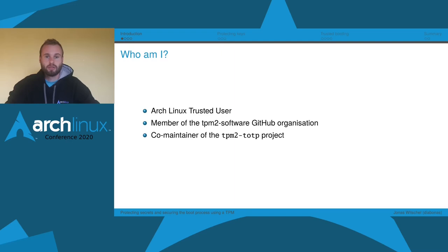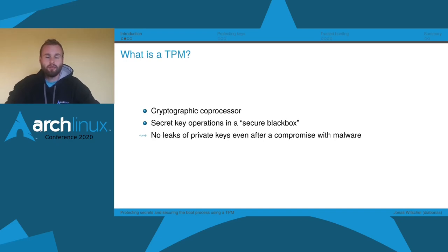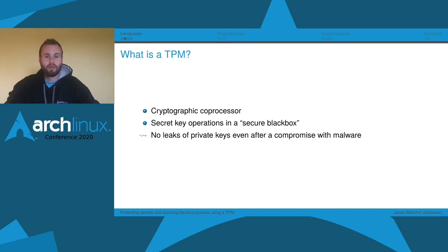To get started with the actual talk, the first question some of you might have is: what actually is a Trusted Platform Module, and why should I care about it? A Trusted Platform Module is a small chip on your computer, totally separate from your main system — it has its own memory and processing capabilities, and it can do cryptographic operations like encrypting or signing data. The idea is that you can store secrets on the TPM, totally separate from your main system, do operations there, and never expose them to your actual system.